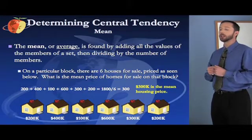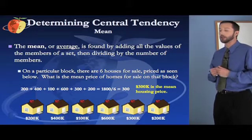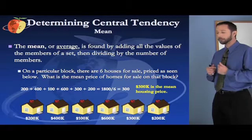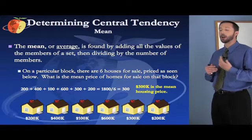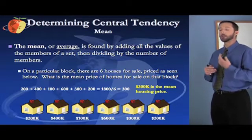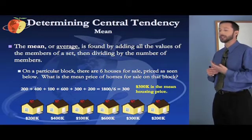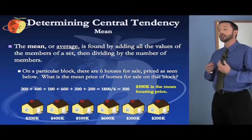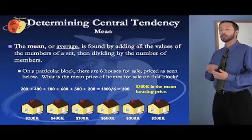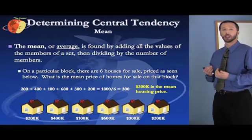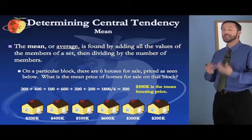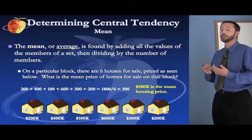So let's say that on this particular block there are six houses for sale, priced as seen below. What is the mean price of the homes for sale on this particular block? We add up all the prices: 200 plus 400 plus 100 plus 600 plus 300 plus 200, and we get 1,800. There are six houses on this block, so we divide by six. 1,800 divided by six is 300. So $300,000 is the mean — the average housing price in this neighborhood.